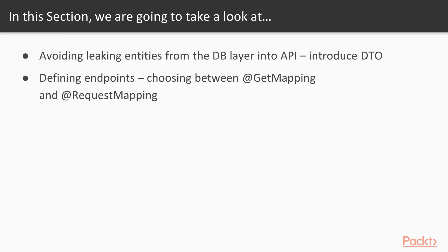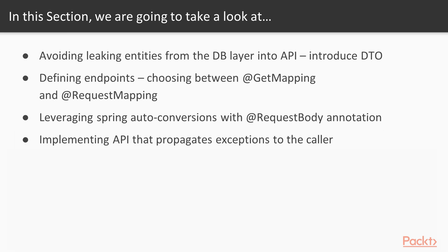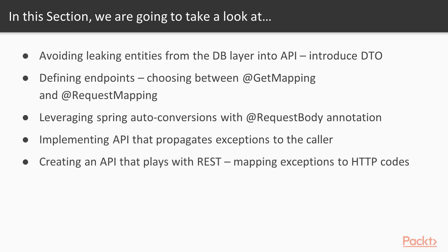Then we'll be defining endpoints, choosing between the @GetMapping and @RequestMapping annotations. The third video will be about leveraging Spring auto-conversions with @RequestBody annotations. Next, we'll implement an API that propagates exceptions to the caller, covering different approaches for handling that. Finally, we'll create an API that plays well with REST by mapping exceptions to HTTP codes according to REST guidelines.